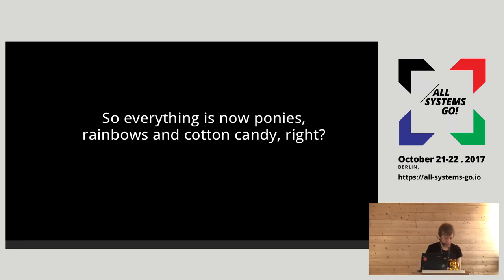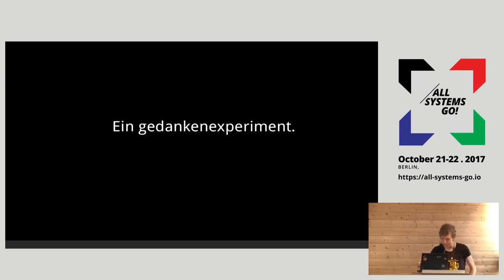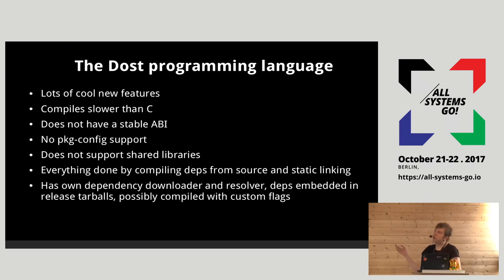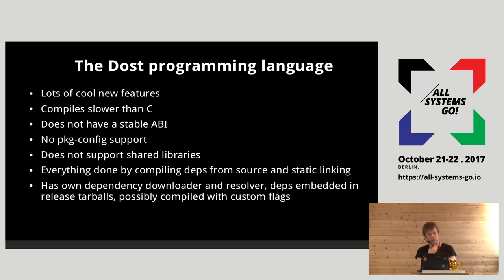So now everything is fine — we have our new build system, things are fast and simple. Well, since we are in Germany, let's do a thought experiment. One of the things changing in the Linux ecosystem is a lot of new programming languages coming up. Let's create one for this thought experiment — it's called DOST — which has all sorts of cool features, and notably compiles a lot slower than C.